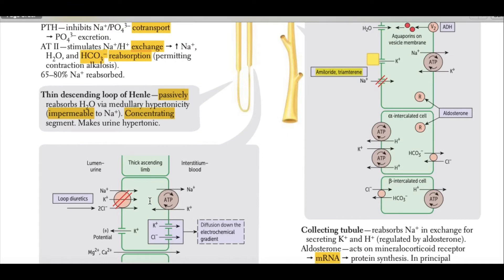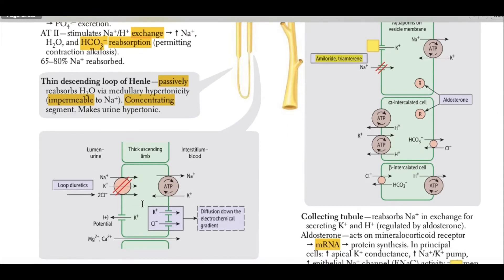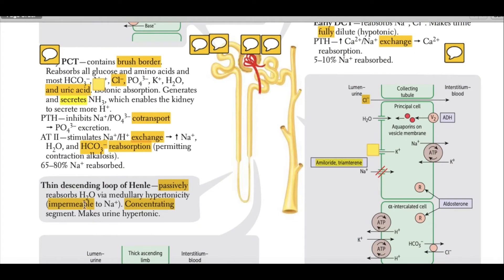The next part of the kidney is the thin descending loop of Henle. This passively reabsorbs water via medullary hypertonicity. This part is impermeable to sodium and is a concentrating segment, making urine hypertonic.